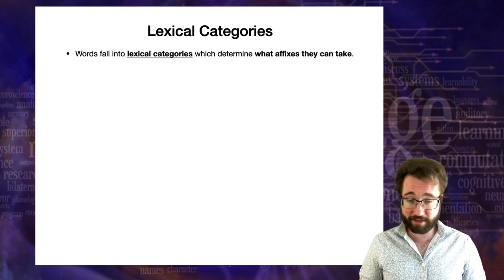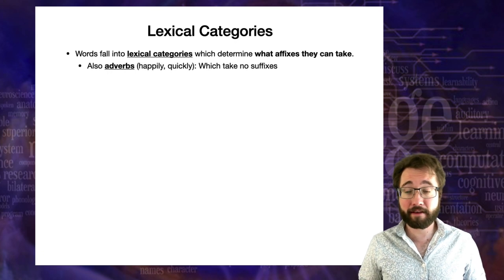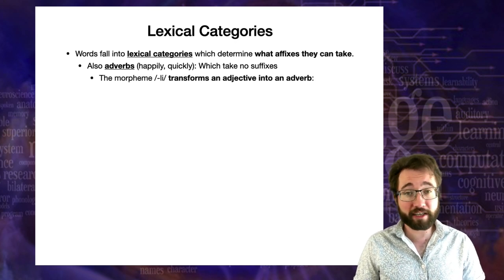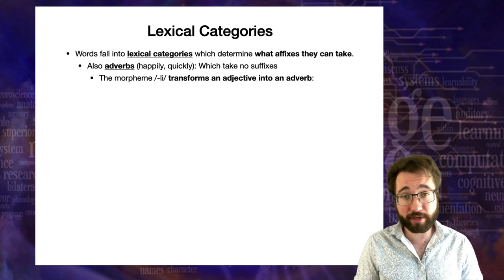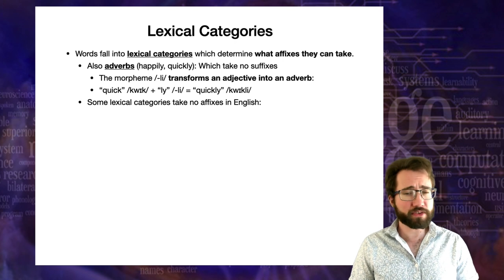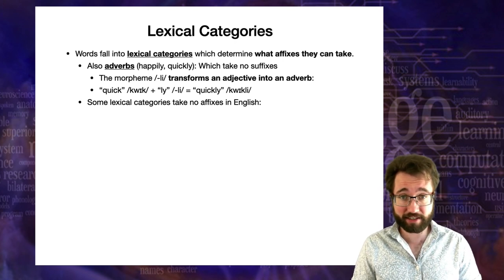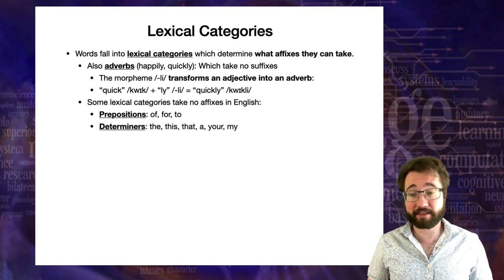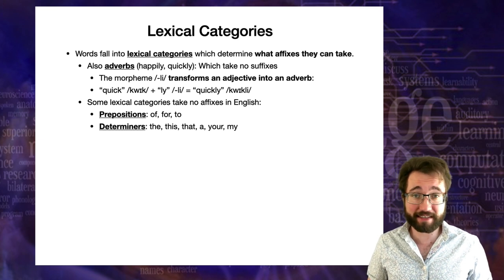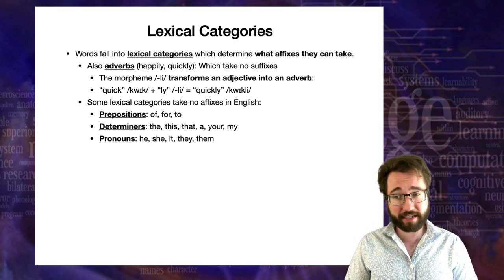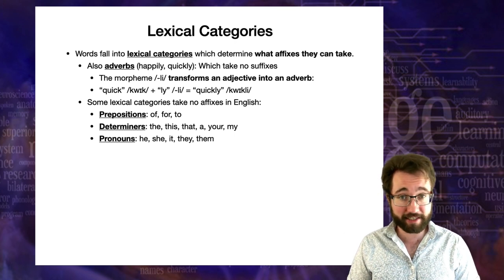There are further lexical categories. Adverbs like 'happily' and 'quickly' do not take suffixes themselves, but the morpheme 'li' — a suffix added to adjectives — turns them into adverbs: 'quick' plus 'li' gives 'quickly.' There are also lexical categories that don't take any affixes in English: prepositions like 'of,' 'for,' 'to'; determiners like 'the,' 'this,' 'a,' 'my'; and pronouns like 'he,' 'she,' 'it,' 'they.' In English, these do not take affixes, though in other languages they may.